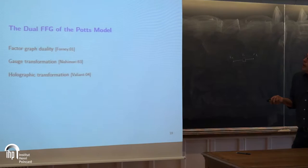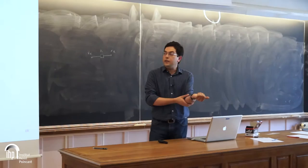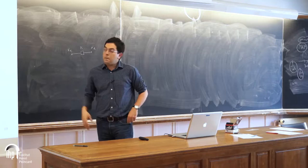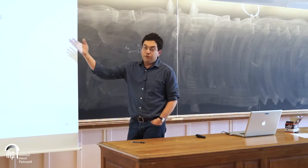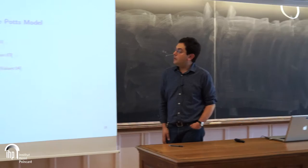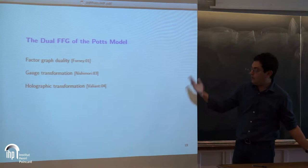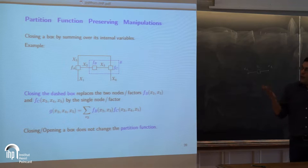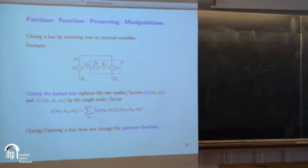Now I define the dual. I only have two or three slides to explain this duality, since it takes time to prove fully. Essentially everything in terms of factor graphs goes back to Forney's paper on normal realization of graphical models. It can be seen as a special case of gauge transformation, well known in statistical physics, and recent work shows it's also related to holographic algorithms in computer science.